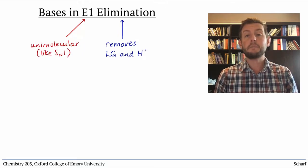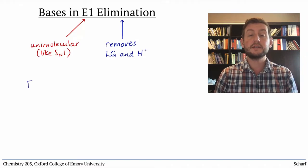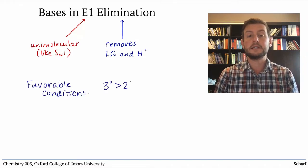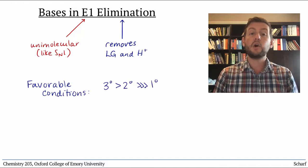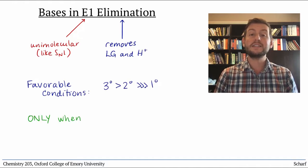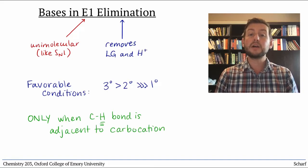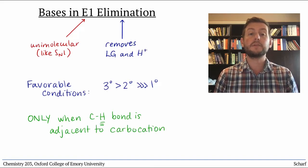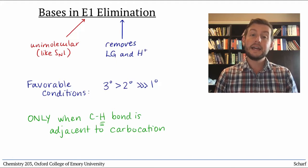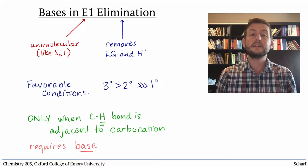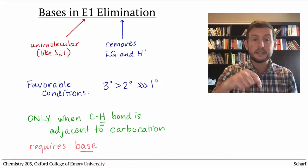It typically happens under the same sorts of conditions that favor SN1 reactions, tertiary leaving groups for instance. But the elimination can only occur when an adjacent C-H bond hyperconjugates with the empty p orbital of the carbocation, and when a base is present which, for whatever reason, doesn't like to add directly into the empty p orbital.